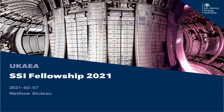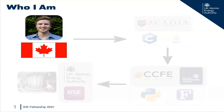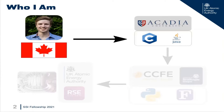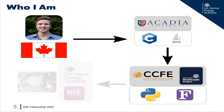Hello, my name is Matthew Bluto, and this is my video application for the SSI Fellowship 2021. I'm originally from Canada, and my education is in physics. My undergraduate degree at Acadia University is where I was first introduced to programming in a scientific context through Java and C courses and joining the programming competition team. Keen to further explore programming in physics, I pursued a PhD in computational atomic and plasma physics based at the Culham Centre for Fusion Energy.